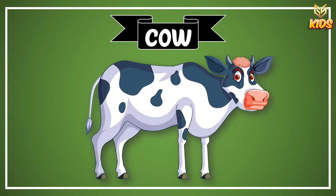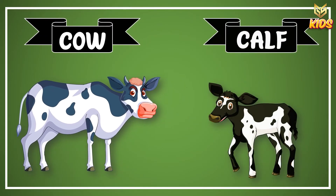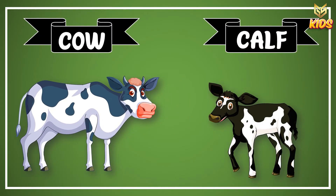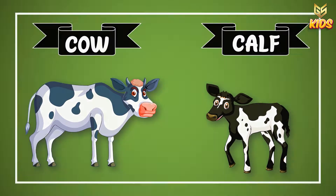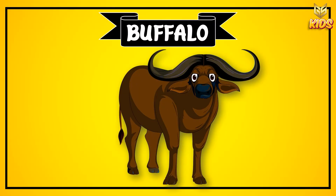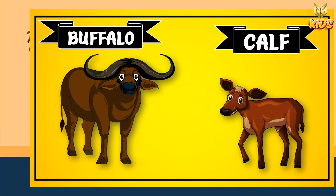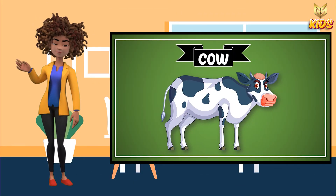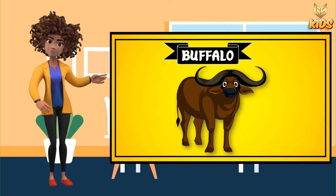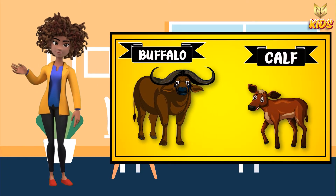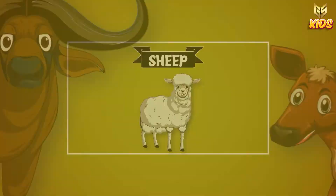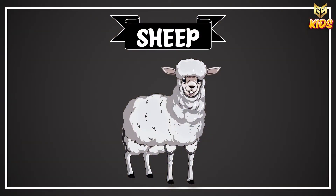Children, look here. What you can see — this is a cow. Yes, this is a cow, and the baby of a cow is called a calf. This is a buffalo. Yes, what is this? This is a buffalo, and the baby of a buffalo is also called a calf. So remember, the baby of a cow and the baby of a buffalo are both called calf.